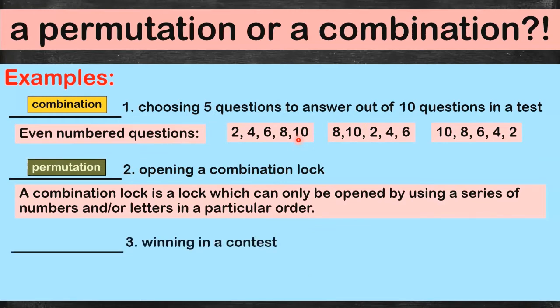What about winning in a contest? This is generally a permutation — especially when there's a first, second, and third place. But in this example, it doesn't specify whether there's a ranking. If there's only one winner, the situation could be either a permutation or a combination.